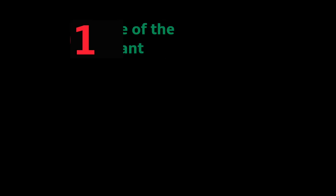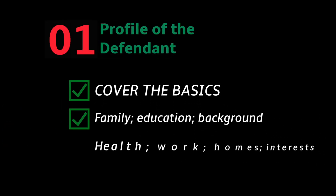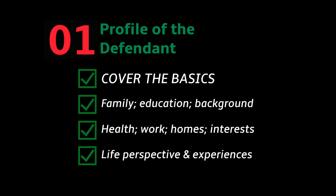Document one: a profile of the defendant — i.e. you. Your legal team, the barrister and the solicitor, will have no idea who you are. They might be used to dealing with unfavourable individuals, so you'll want to set yourself apart. Cover the basic details: your family, your age, your background, your ethnicity, where you live, where you have lived, your education, your criminal record if you have one, your work record. Include a CV as an appendix if necessary.